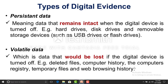Digital evidence may be found in two types: persistent data and volatile data. Persistent data remains intact even when the digital device is switched off — for example, data on hard drives, USB flash drives, or removable storage devices. Volatile data is lost when the device is switched off — for example, deleted files, browser history, cookies, and temporary files. Data stored on flash drives or USB cables remains consistent and intact internally.